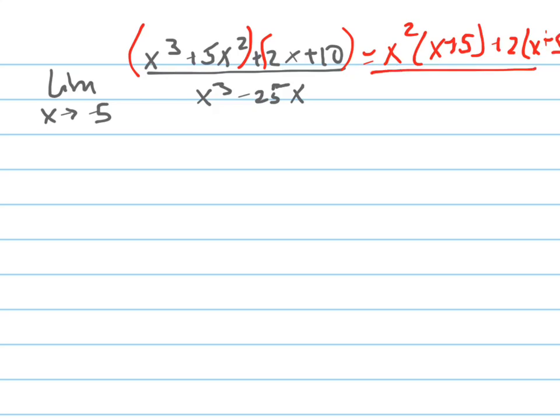And then on the bottom, if I take an x out, I'll be left with x squared minus 25. And what does x squared minus 25 factor into? It's a difference of perfect squares. x plus 5, x minus 5.